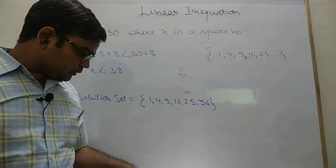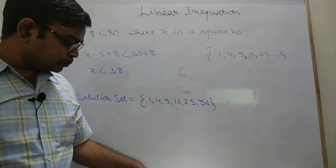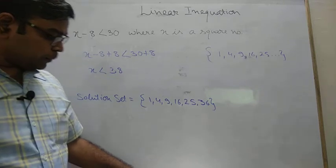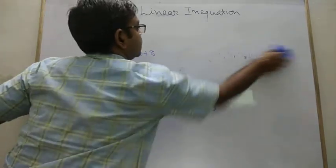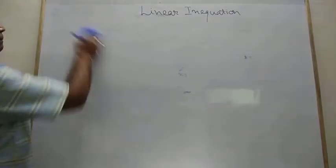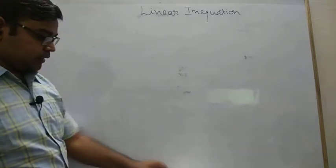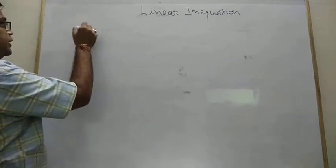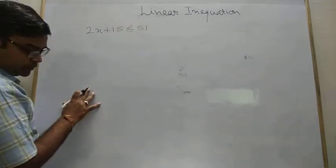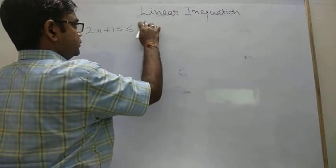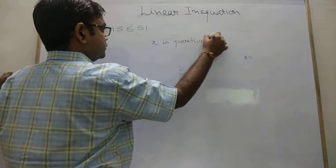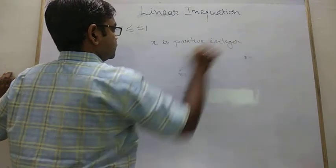Now I am choosing one more question from this. It will take some time to rub the board. So hope you people must understand this one. It says that 2x plus 15 less than equals to 51. This is the inequation. And it says that x is a positive integer.